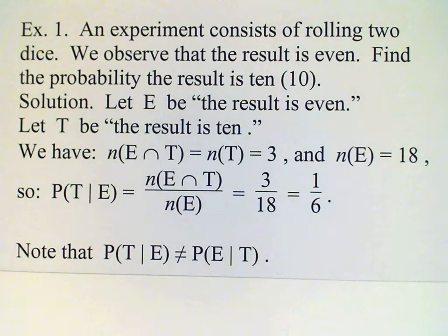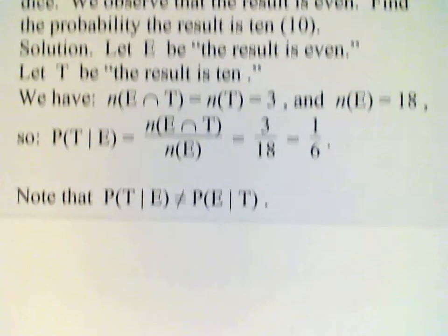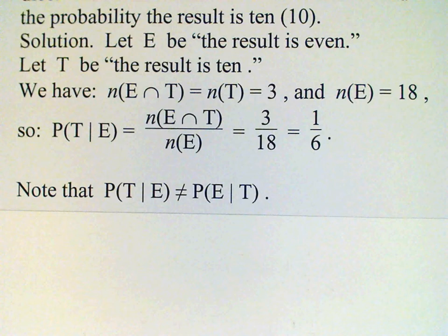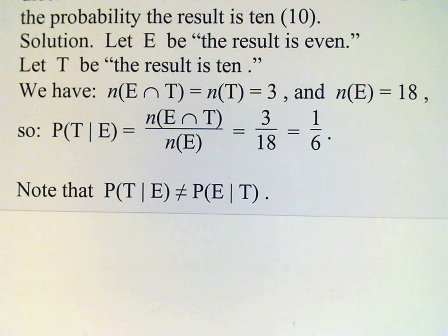It's important to realize that the conditional probability of T given E is not the same as the conditional probability of E given T. In general these two conditional probabilities will not be the same, though occasionally they are. P(T|E) is the probability of a ten given it's even — we worked that out to be one-sixth. P(E|T) is the probability the roll is even given that it's a ten, which is one hundred percent, because if you have a ten then it's automatically even.